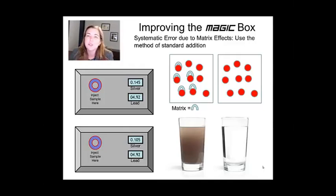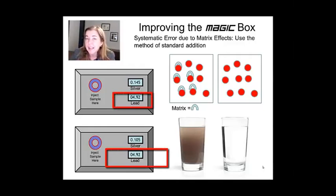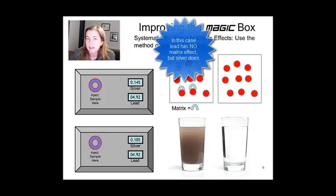An internal standard, as shown here over on the left, won't necessarily help because the kinds of things that would influence lead may not influence the silver. In some cases, perhaps, but generally not. So you don't really want to rely on an internal standard to help you out with matrix effects.